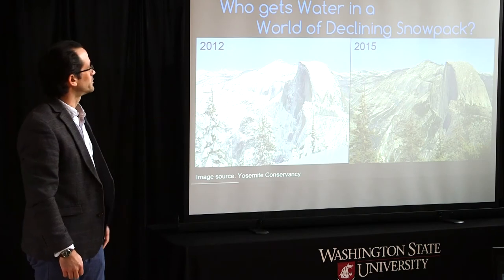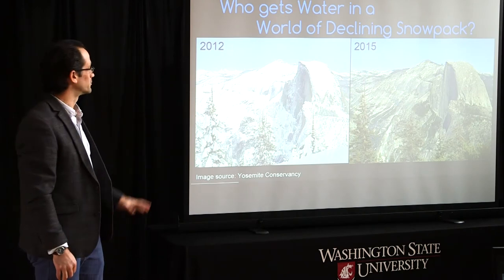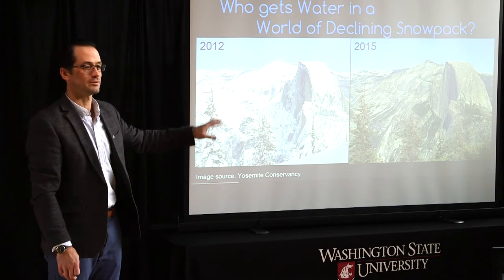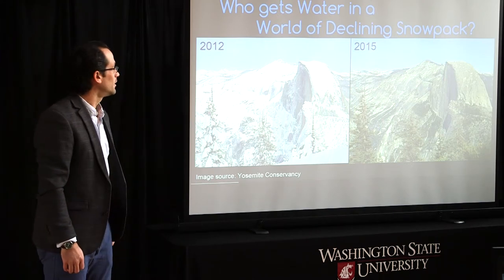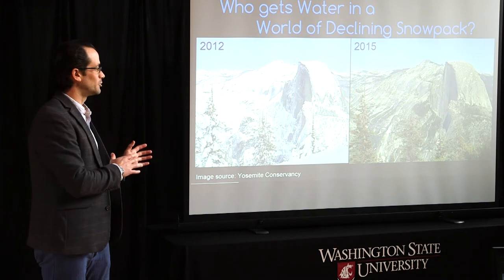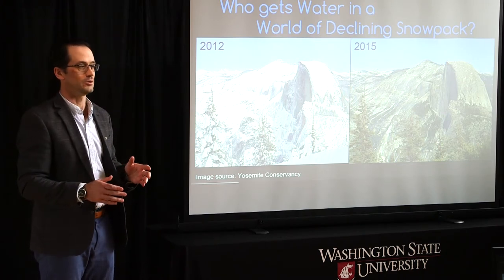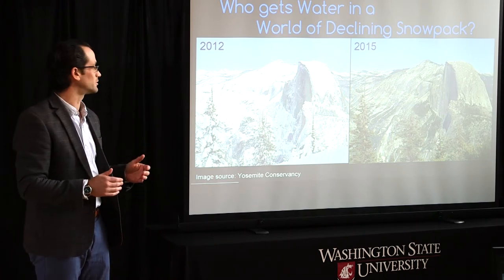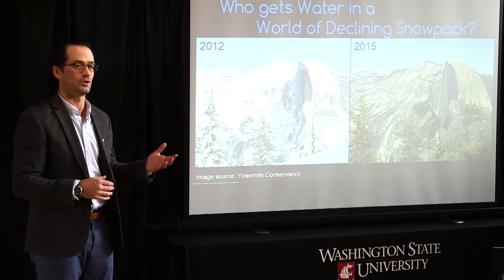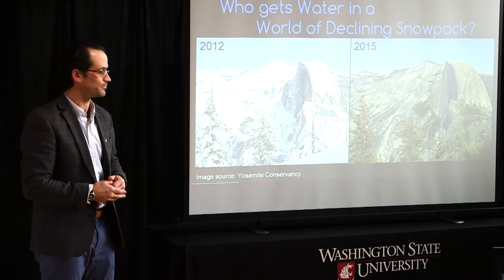I chose these pictures of Yosemite National Park for maximum impact. We've got a lot of snow in 2012, and then you can see in 2015 hardly any snow at all. Part of the reason I did this is to demonstrate the fragility of snowpack to a change in temperature. A small change in temperature can really have a large effect on the amount of snow that accumulates in our mountains in the western United States.